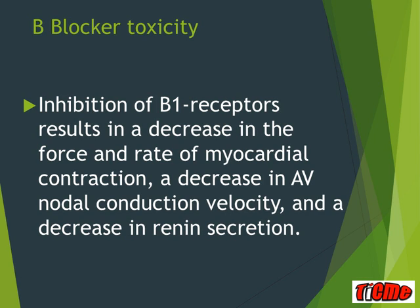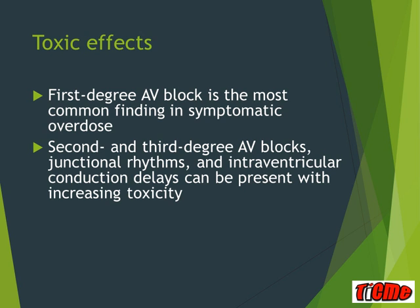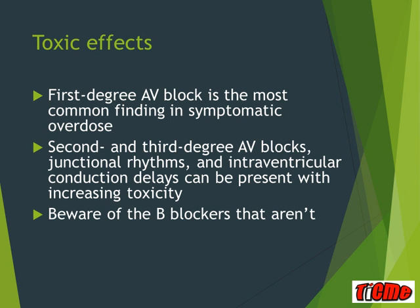Most commonly, sinus bradycardia is due to beta-blocker toxicity. Beta-1 receptors in the heart cause negative inotropy and negative chronotropy, slowdown of AV node conduction velocity, and decreased renin. The most common finding from isolated beta-blocker overdose is sinus bradycardia or first-degree AV block, with higher-grade AV blocks and junctional conduction delay possible with greater toxicity. Isolated beta-1-specific blockers like metoprolol rarely cause major problems in patients with normal hearts. However, propranolol and sotalol are dangerous because they also have sodium and potassium channel effects beyond their beta-blocking action.